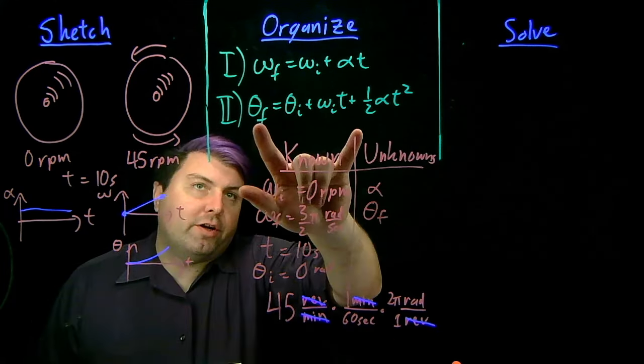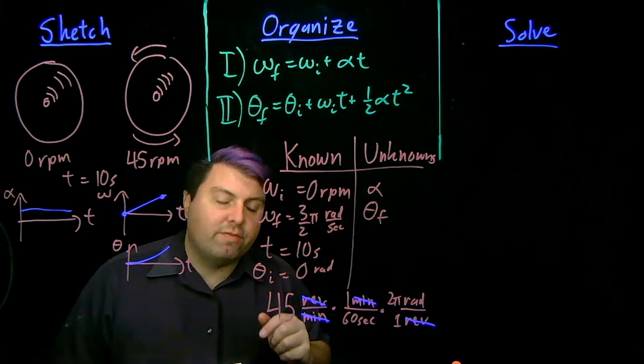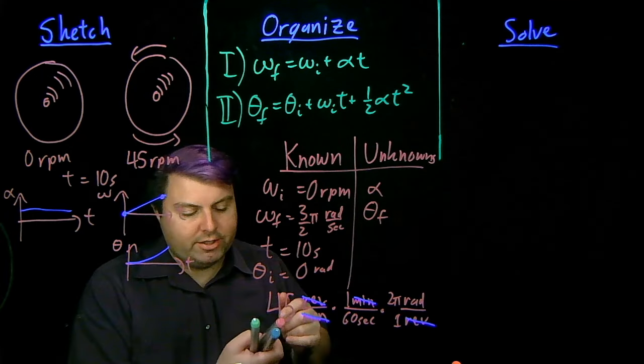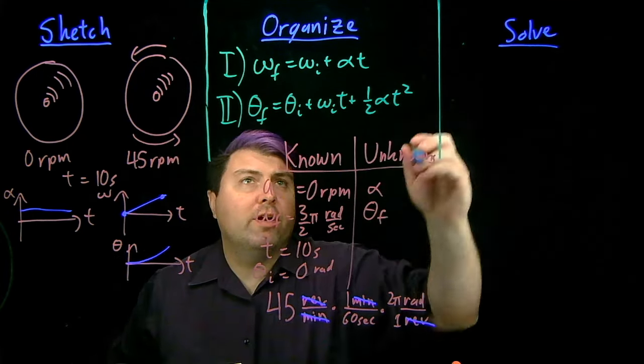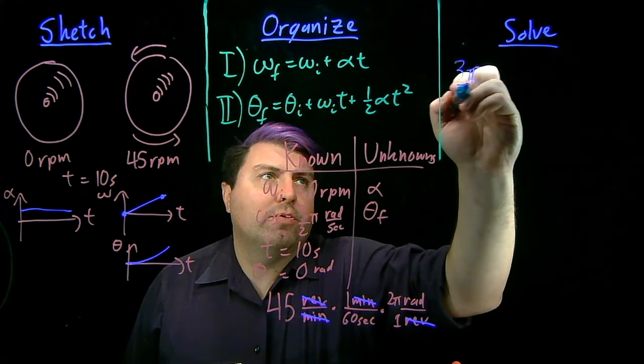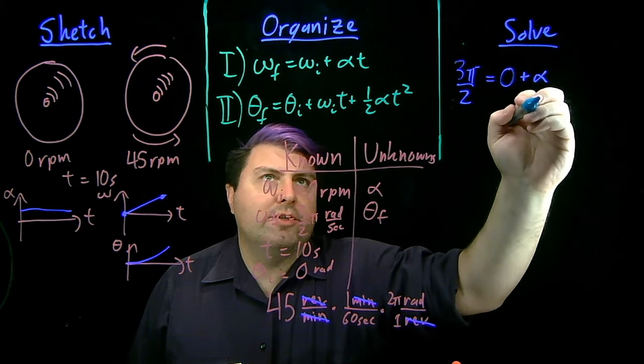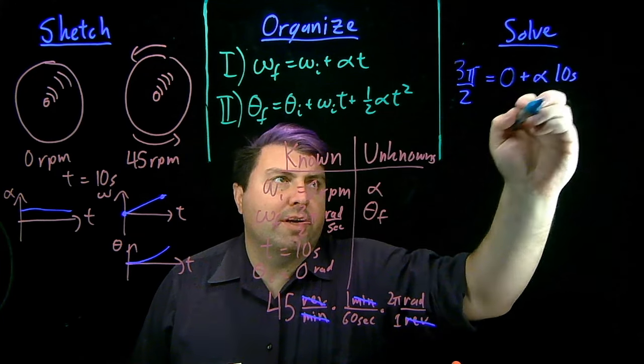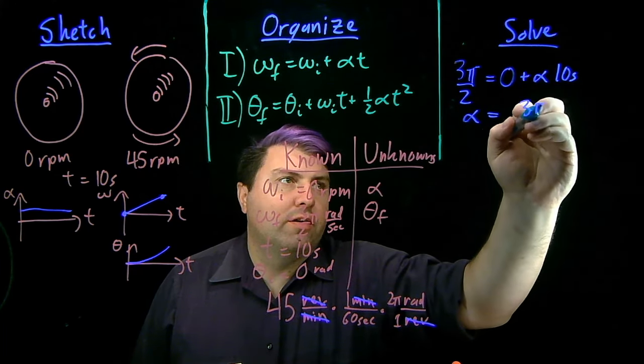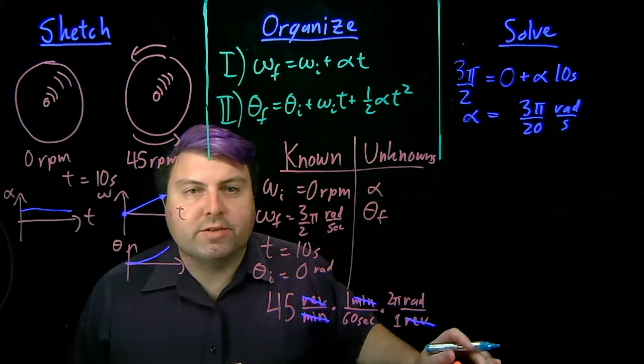So if we look at equation 2, we don't know theta f and we don't know alpha. So we don't have enough to solve here. But if we look up at equation 1, we know omega f is 3 pi over 2. We know omega i is zero. We don't know alpha just yet, but we know time is 10 seconds. So we can solve for alpha, which should be 3 pi over 20 radians per second squared.